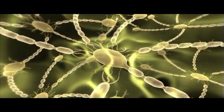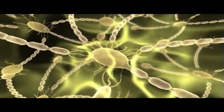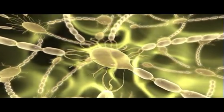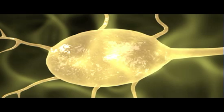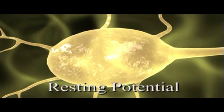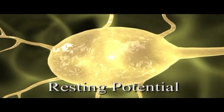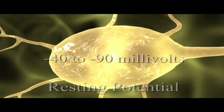Unstimulated, neurons maintain a constant electrical difference, or potential, across their cell membranes. This potential, called resting potential, is always negative inside the cell and ranges from negative 40 to negative 90 millivolts.